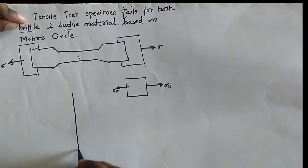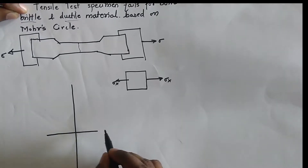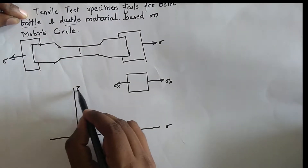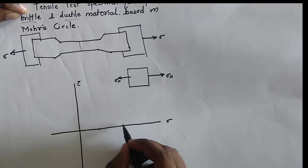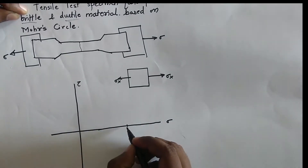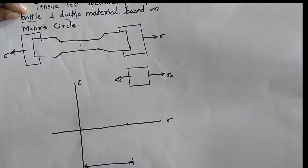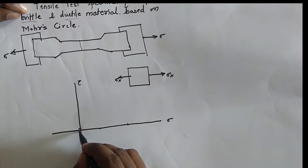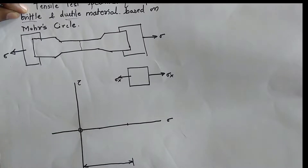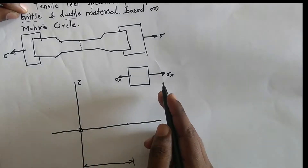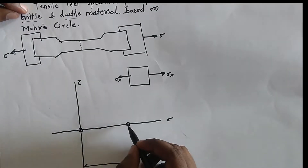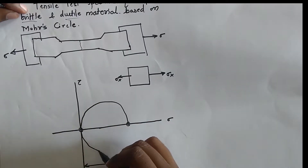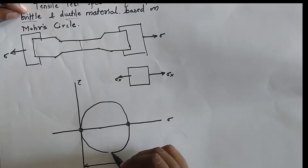The Mohr's circle for this tensile test specimen will be drawn with the x-axis as sigma and the y-axis as shear stress. Sigma x is acting on the system, so this distance is sigma x. There is no stress at the y-plane, so sigma y will be 0. There is no shear stress, so both points will lie on the sigma axis, and our Mohr's circle will simply be a circle from 0 to sigma x.